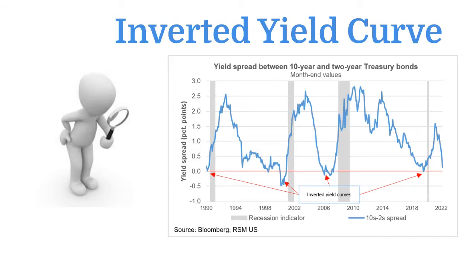In fact, we look at an inverted yield curve as a leading indicator. The two yields that we look at to become inverted that have led to every recession is the two-year Treasury note and the 10-year Treasury note. When the yield on the two-year Treasury note is higher than the 10-year Treasury note, 6 to 18 months later, the U.S. economy has gone into recession every time this has happened. The last inverted yield curve we had was in 2019, when the 10-year was lower than the two-year. Wall Street uses the two-year and 10-year Treasuries on the yield curve to forecast recessions.